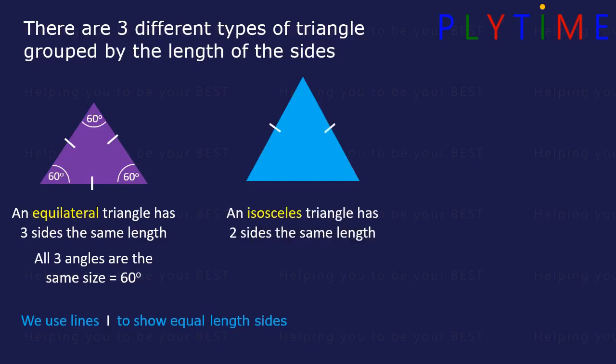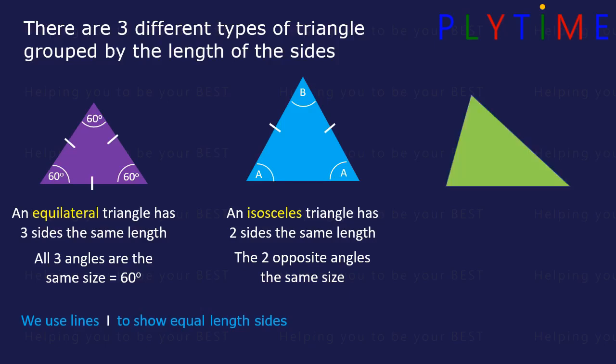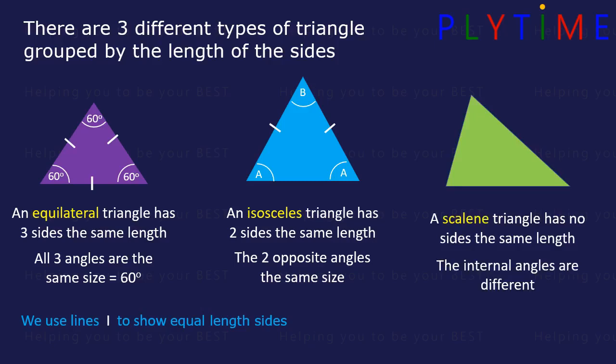This is an isosceles triangle and two of the sides are the same length. The two opposite angles are also the same size — we can call them A. This is a scalene triangle. It has no sides that are the same length and the internal angles are all different.